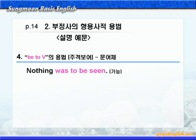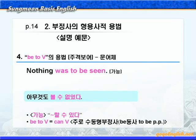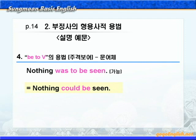다음은 가능입니다. be-to부정사가 가능의 의미일 때는 뭐뭐 할 수 있다, 이렇게 해석하면 됩니다. 'Nothing was to be seen.' 아무것도 볼 수 없었다. be-to부정사가 가능의 의미로 쓰일 경우에는 주로 수동태 형식으로, 즉 'be동사 + to be + 과거분사'의 형태로 쓰입니다. 해석이 뭐뭐 할 수 있다이니까 조동사 'can'을 써서 바꿀 수 있고, 과거 시제이므로 'could'가 됩니다. 'Nothing could be seen.'